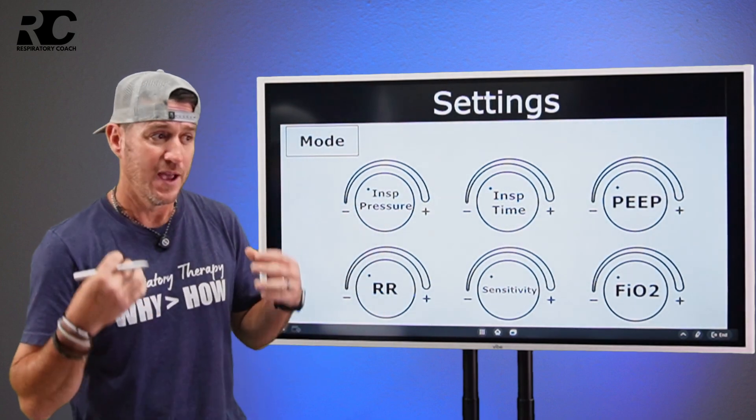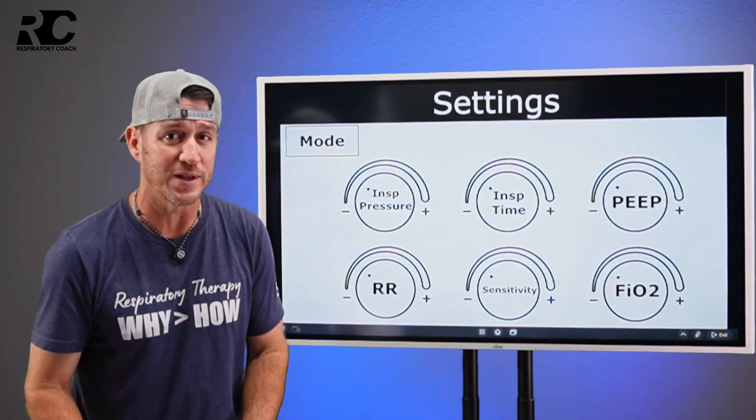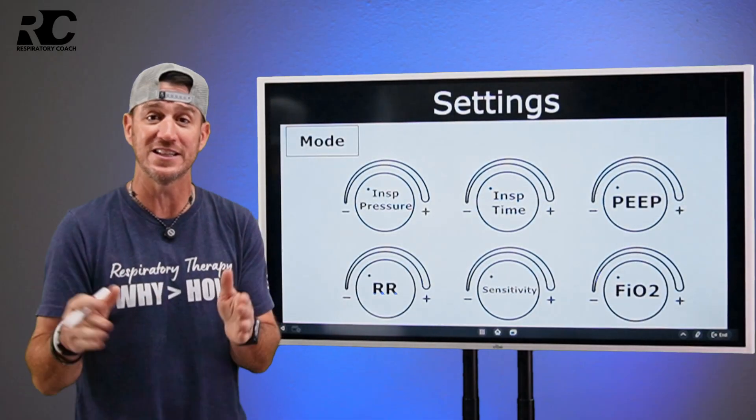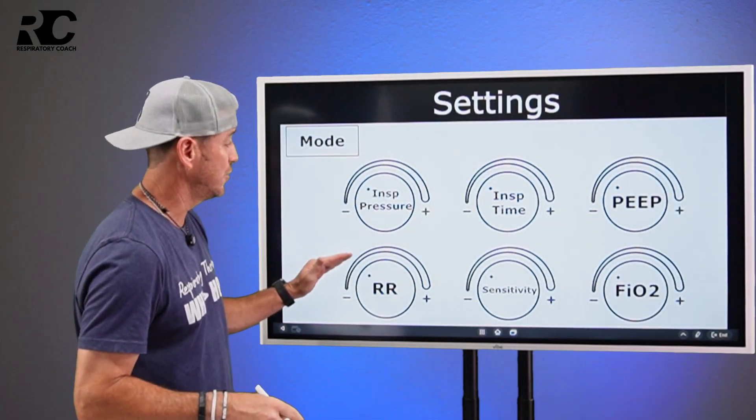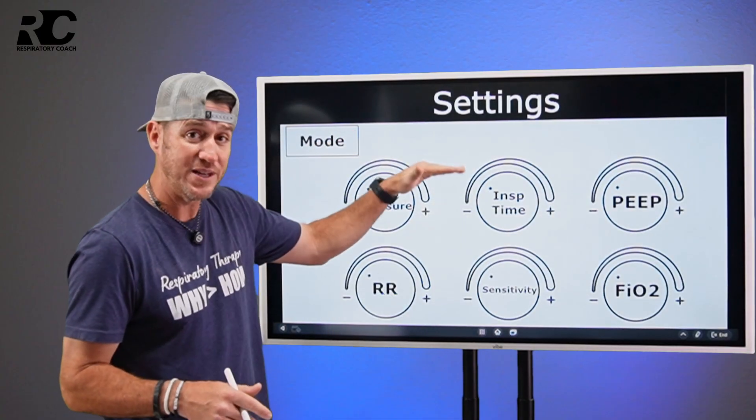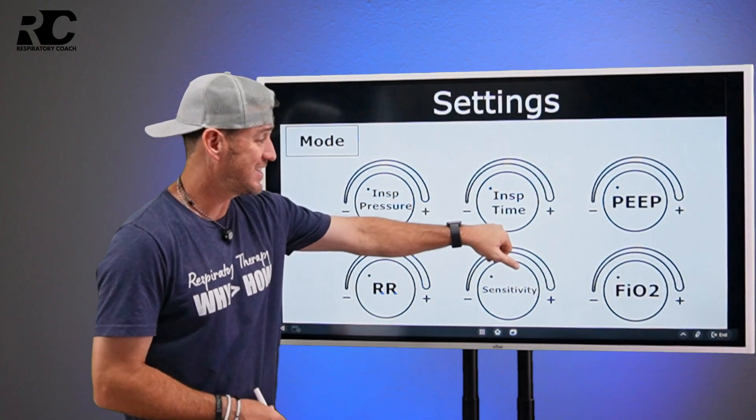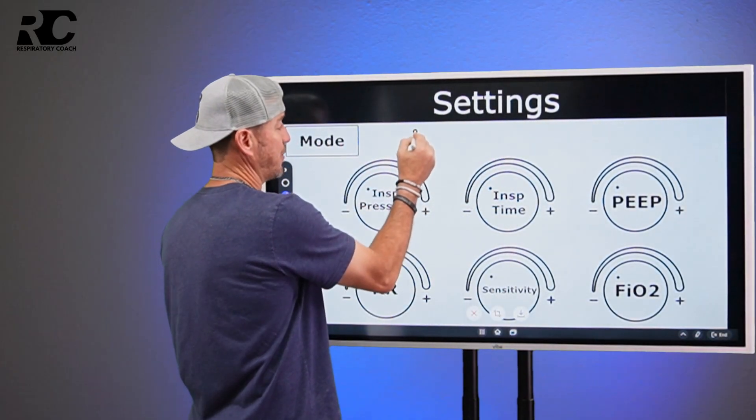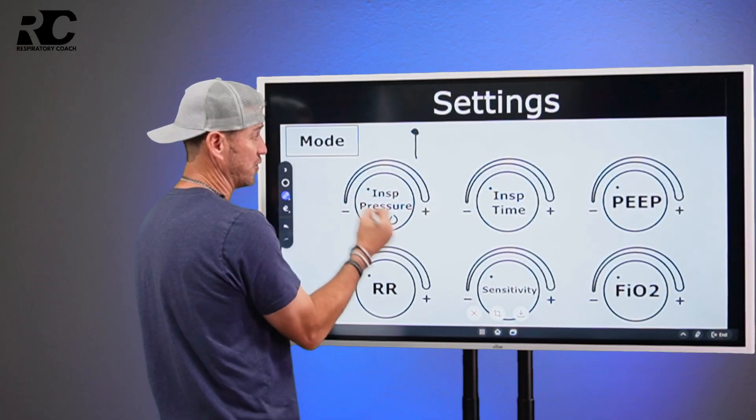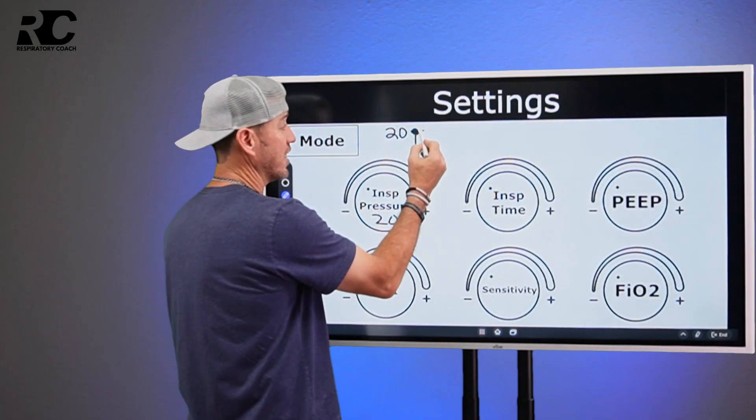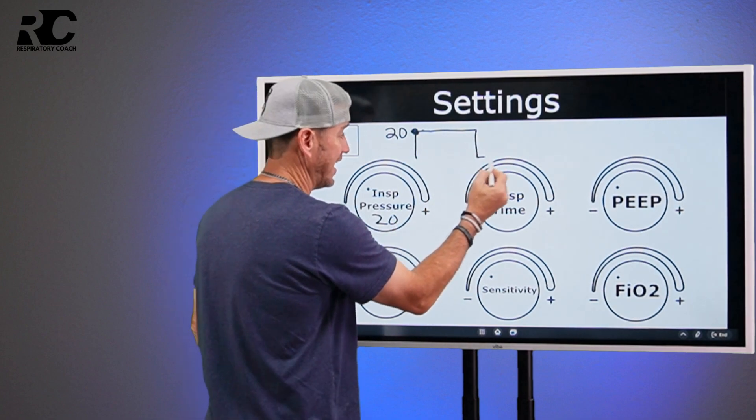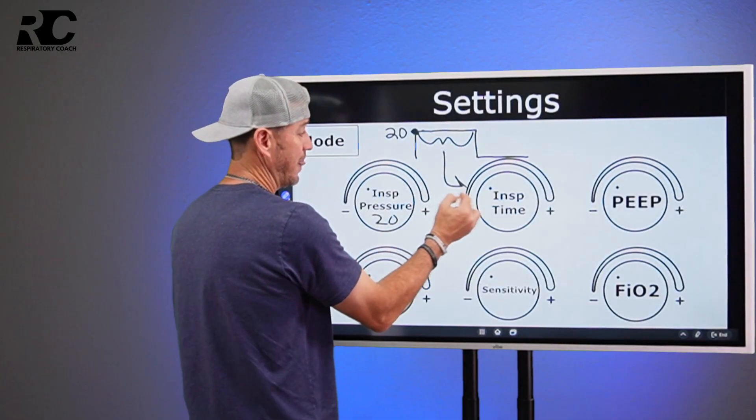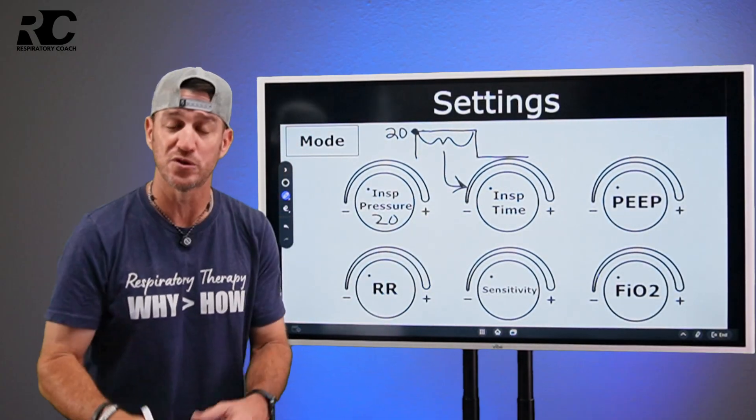And because I'm a registered respiratory therapist, I know that pressure control is time cycled. The word cycle means to end inspiration. So the ventilator is going to increase the pressure and then hold it for the set eye time. It'll look something like this. Increase the pressure to what? The set inspiratory pressure. So we're going to raise the 20 and then we're going to hold it. And then we're going to exhale...